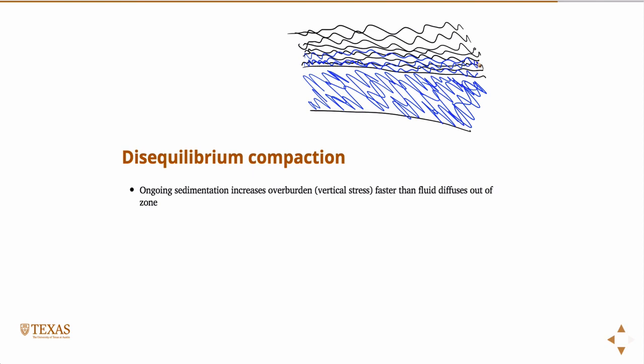But if this sedimentation continues to increase at a rate faster than that diffusion can occur, then you can achieve an overpressure scenario. Because I'm building up layer on top of it, increasing the vertical stress, adding weight on top, and the fluid is not equilibrating. The vertical stress is being increased, pushing on the rock below it, and that pressure can actually cause the pores to collapse. I'm squeezing the pores and the fluid is not being allowed to diffuse away fast enough, and that can cause this disequilibrium compaction.